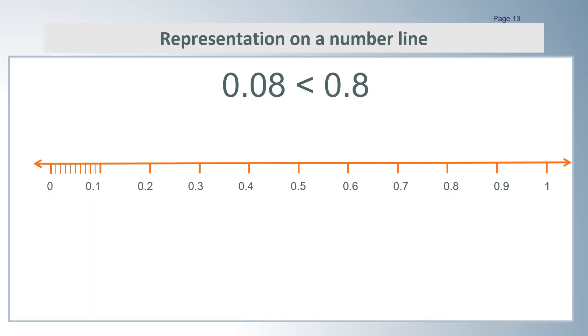Here we can see 0.08 represented on a number line. The blue arrow shows 0.08. Here, take a closer look. And here, the green arrow shows 0.8.